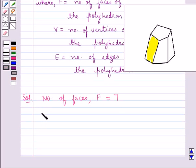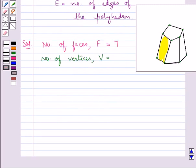Then the number of vertices, that is V, equals 2, 3, 4, 5, 6, 7, 8, 9, and one vertex is behind. So in all we have ten vertices, that is V equals 10.